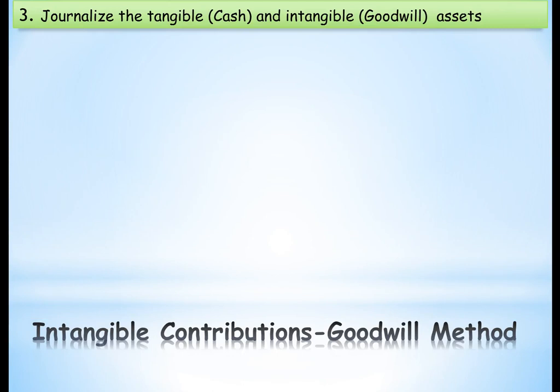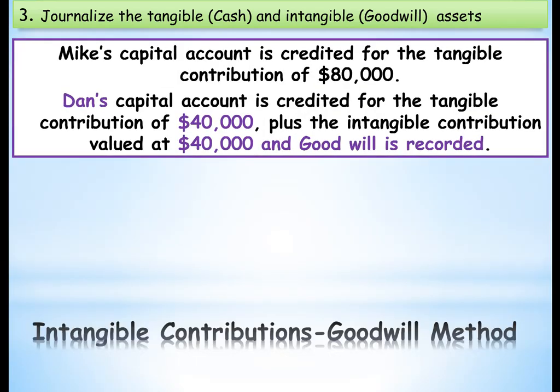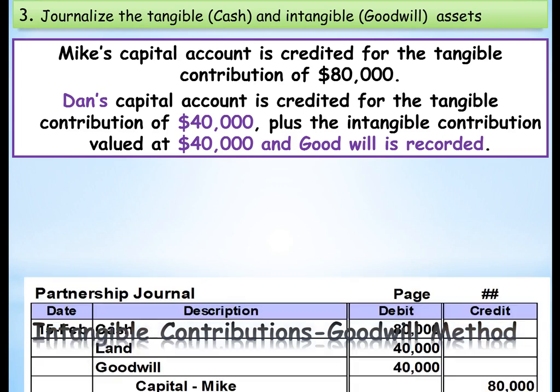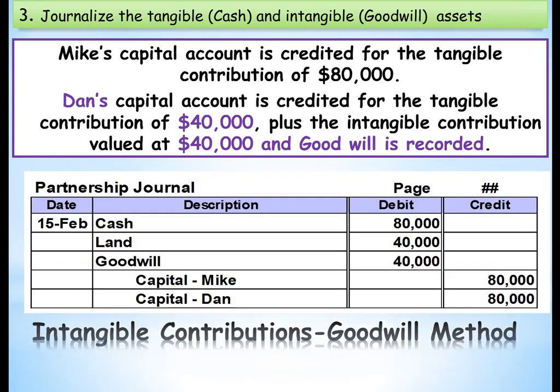For the journal entry under the goodwill method, we debit cash $80,000, land $40,000, and goodwill $40,000. Mike's capital account is credited for his tangible contribution of $80,000, and Dan's capital account is credited for his tangible contribution of $40,000 plus his intangible contribution of $40,000. That covers what happens when you initially start a partnership.